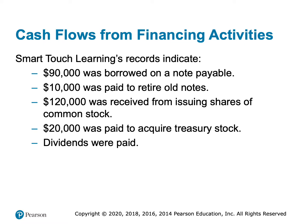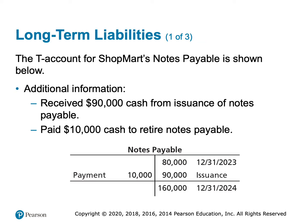For the financing section, notes payable went up. We also know we retired some notes — meaning we paid them off. Notes payable was $80,000 last year and $160,000 this year. We issued $90,000 of new notes, which is a credit to notes payable — money we borrowed. When we retired notes, we debited notes payable and credited cash. That's how we arrive at the $160,000 ending balance.